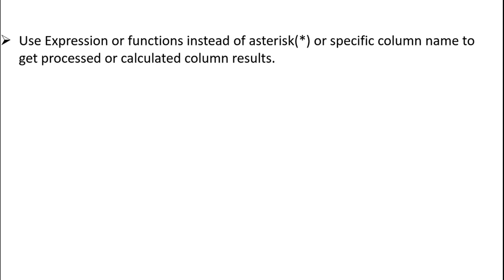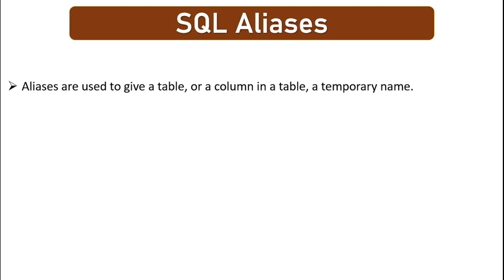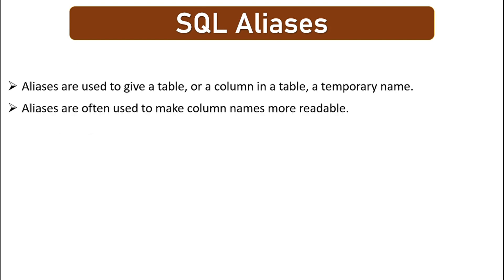In place of star or column names you can write expressions like addition, subtraction, multiplication of two columns, and so on. For example, in this query we add the id and salary columns — both are integers so we can add them. Here I've used the AS keyword followed by 'addition'. This is an alias in SQL, which we use to give a temporary name to a table or column — it works as a nickname.